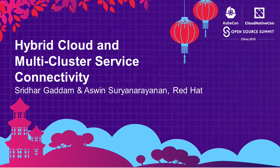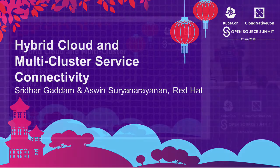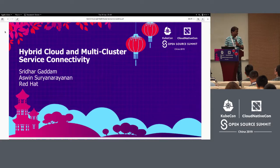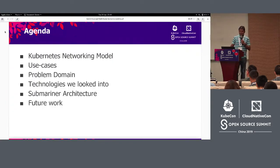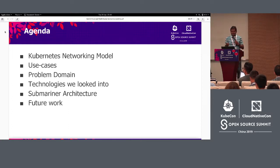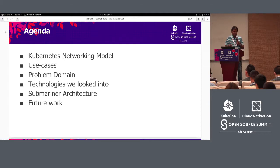Hello everyone. My name is Sridhar and with me I have my colleague Ashwin. We both work for Red Hat. Today we will be talking about hybrid cloud and multi-cluster services discovery. The agenda for today is as follows: we will briefly be going over the Kubernetes networking model, the use cases that motivated us, the problem domain, technologies that we looked into, and finally the solution that we came across, which we found very promising and intend to contribute to.